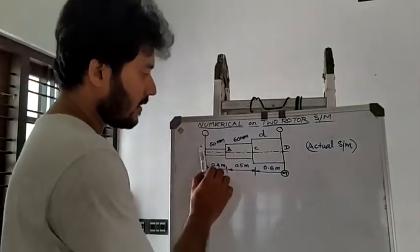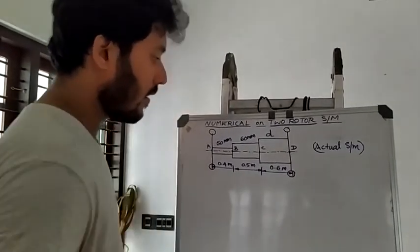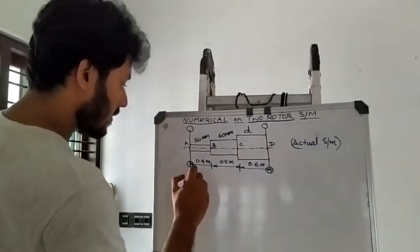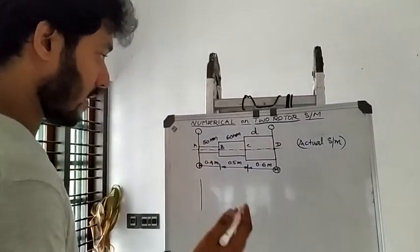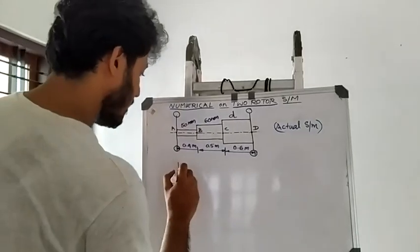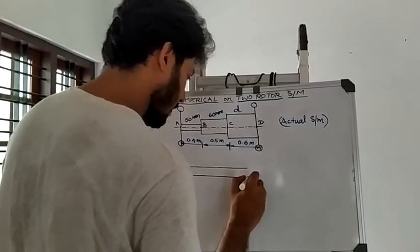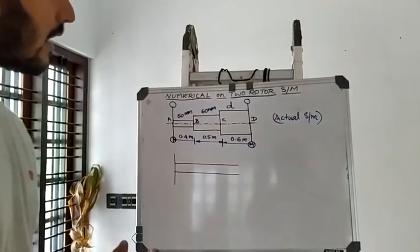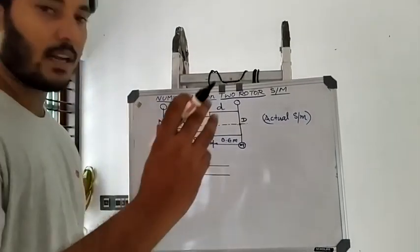Determine: (1) the diameter of portion CD such that the node of torsional vibration is at the center of BC, and (2) the natural frequency of torsional vibration. First, represent the given shaft schematically with the three sections and two rotors at A and D. Then, as the shaft has varying dimensions, devise a torsionally equivalent shaft — this is the first step.